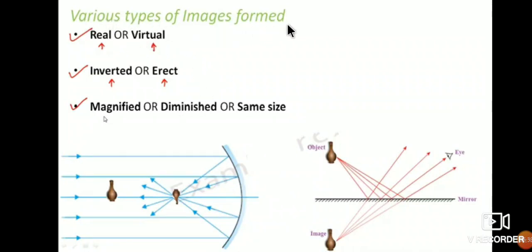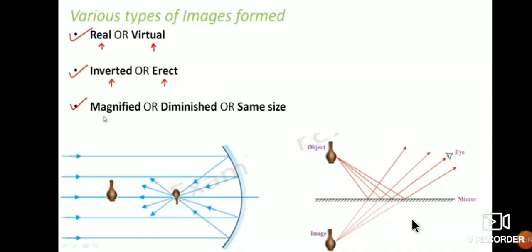There are various types of images formed: real or virtual image, inverted or erect image, and magnified, diminished, or same-size image. Real image is formed in a spherical mirror, while virtual image is formed in a plane mirror. In a spherical mirror, inverted images are formed, while in a plane mirror, erect images are formed. In a spherical mirror the image can be magnified; in a plane mirror the image is the same size as the object.